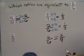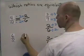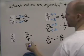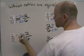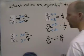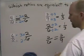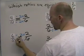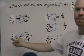The last one we're going to look at is six-twelfths. Is six-twelfths equivalent to two-sixths? In this case, two times three equals six, and six times two is equal to twelve. Since these two numbers are different, that tells us that these two ratios are not equivalent — they are different from each other.